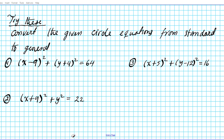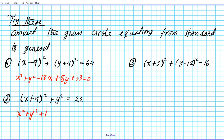Hopefully you spent some time working on the problems. For question 1, the answer is X squared plus Y squared minus 18X plus 8Y plus 33 equals 0. For number 2, the general form is X squared plus Y squared plus 18X plus 59 equals 0. For number 3, the general form is X squared plus Y squared plus 10X minus 24Y plus 153 equals 0.